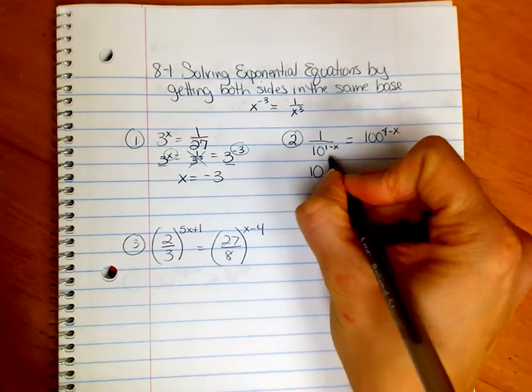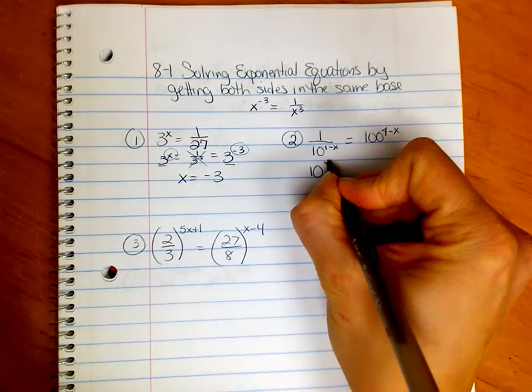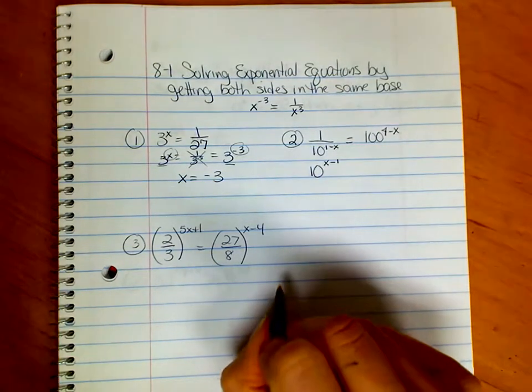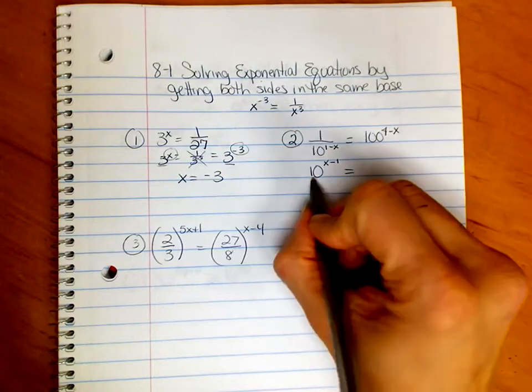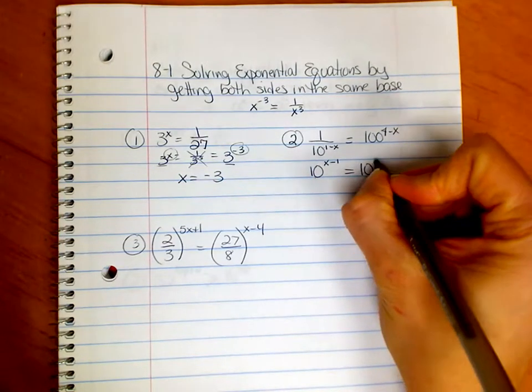So I go 10, and then if I change the signs on both of those, the x will become positive, and the 1 will become negative. So I've just made it like that. And then 100, I need to get it in the same base as 10. 100 is 10 squared.